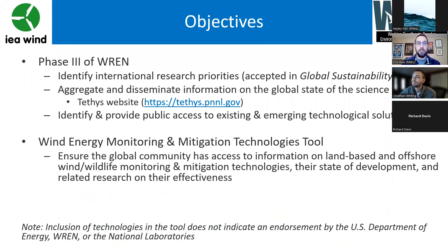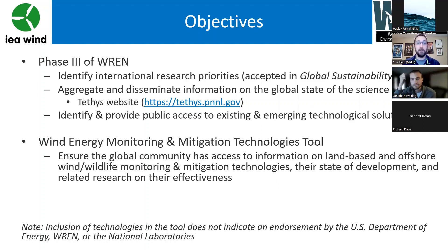In this third phase of Wren, we had three main objectives. One is to identify international research priorities for land-based and offshore wind. We did this over the first two years, and our manuscript was recently accepted by Global Sustainability. We will have that on Tethys and send a notice on Tethys BLAST when it is available. We also aggregate and disseminate information on the global state of the science through webinars, research briefs, IEA technical reports, and all these can be found on Tethys.